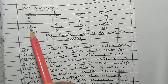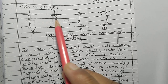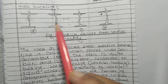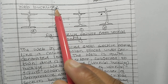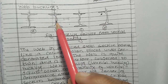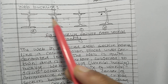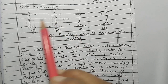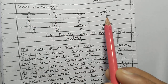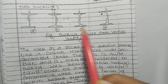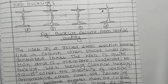Always remember that web buckling always occurs in the middle part of the web, not in the flange. The two outer parts are the flanges, and the middle part is called the web. Load comes vertically and the web behaves like a column, so buckling takes place in the middle part of the web.